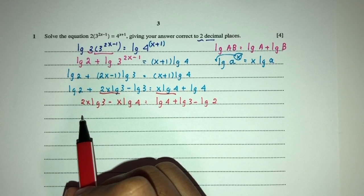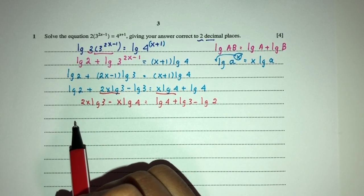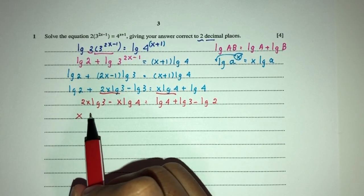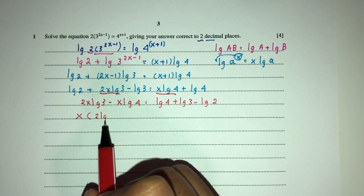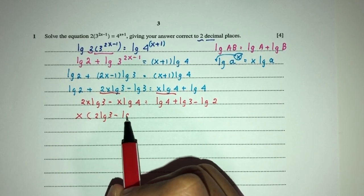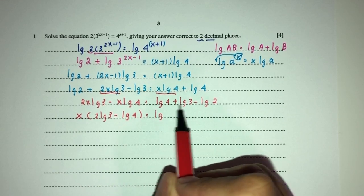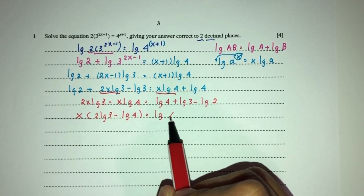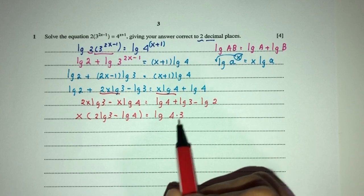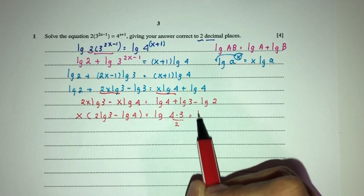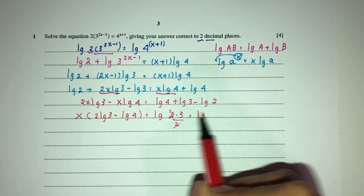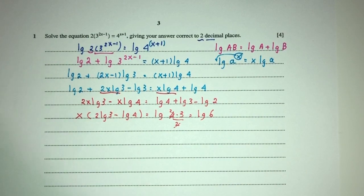Now simplify, we can factorize the value of x outside. You'll have x here. That would be 2 log of 3 minus log of 4. Is equal to combine, because these are the same, you will have log 4 plus become times minus become divide. That would be log of 6.